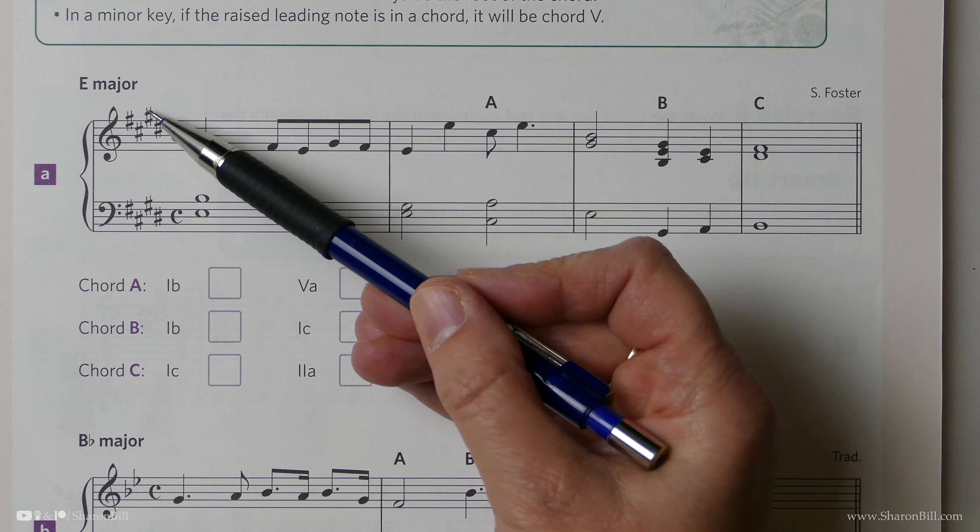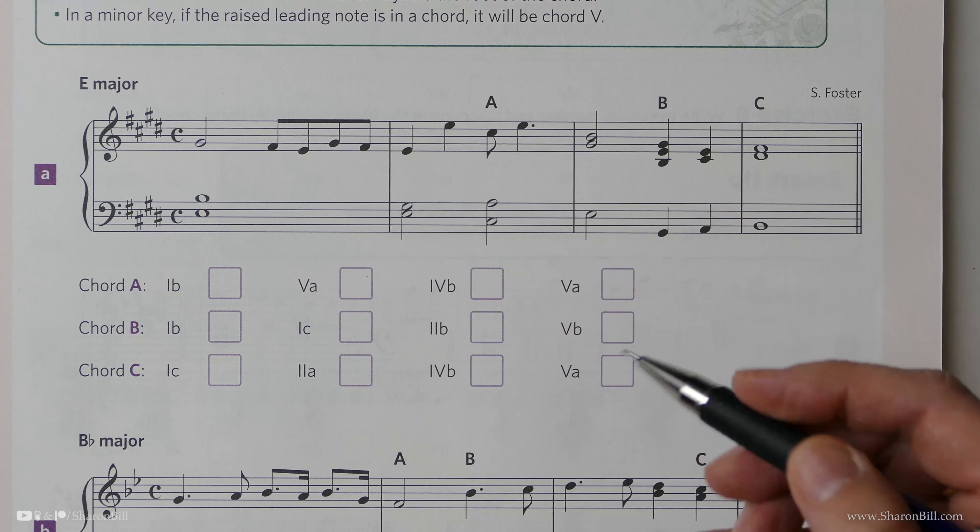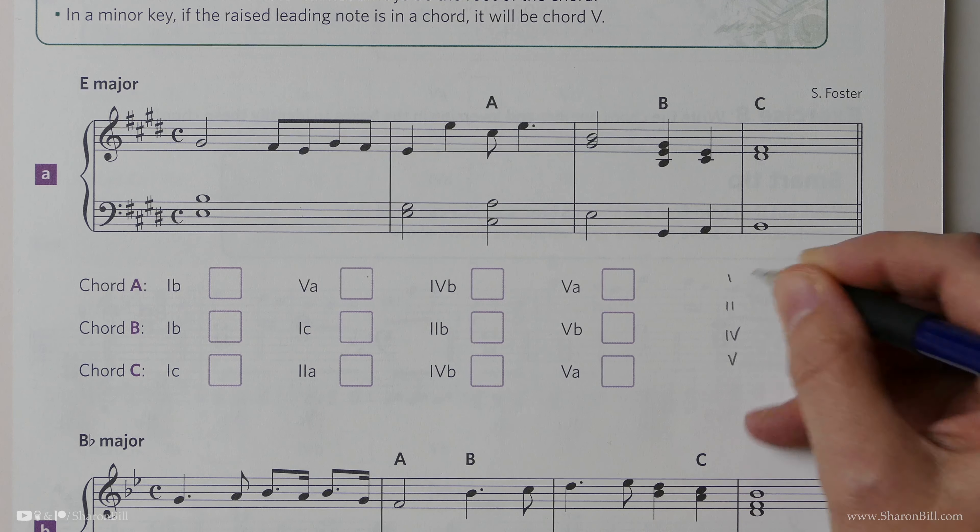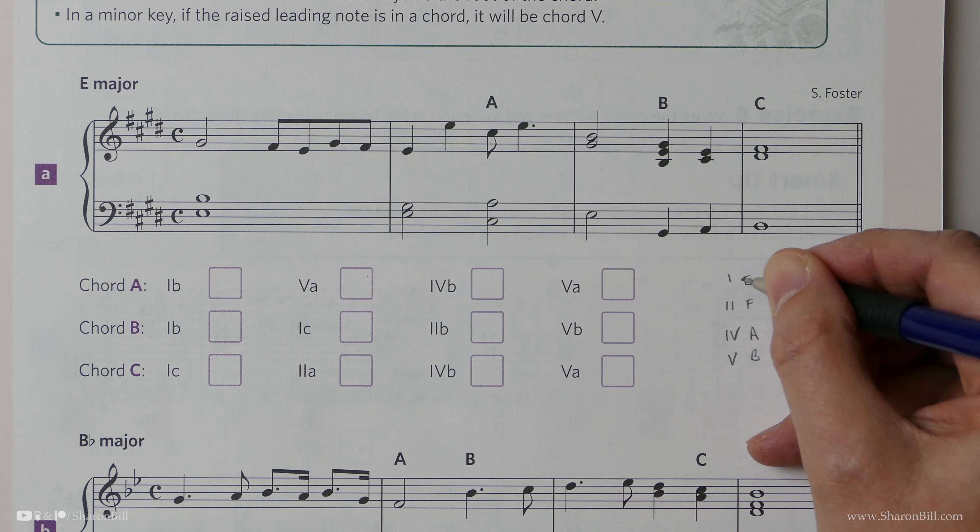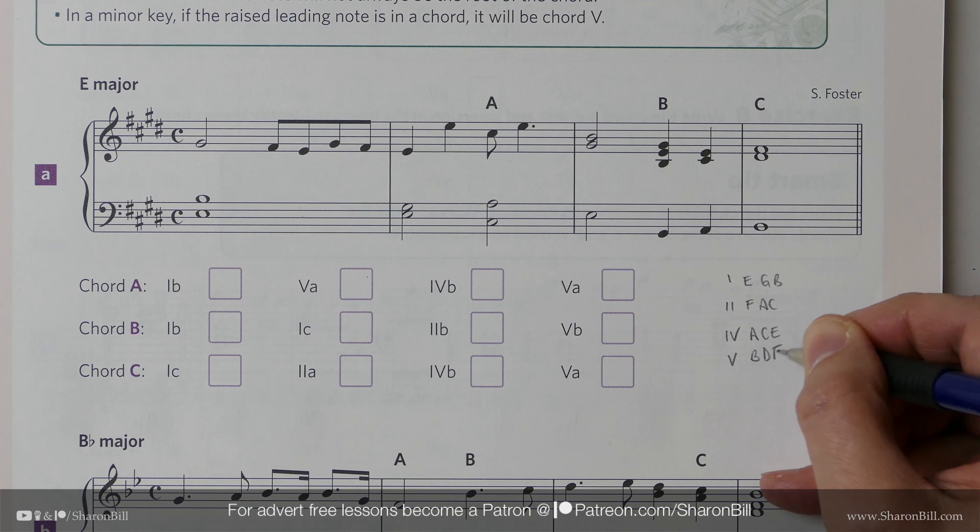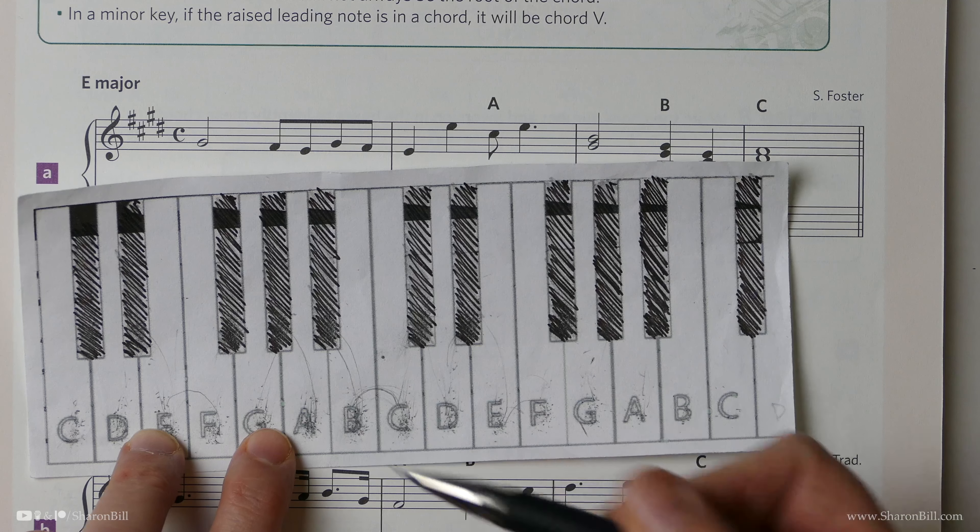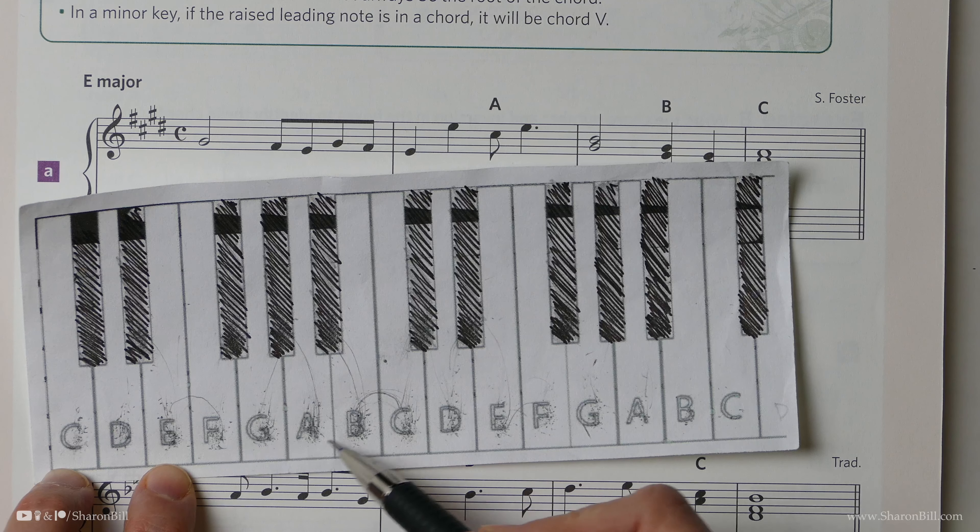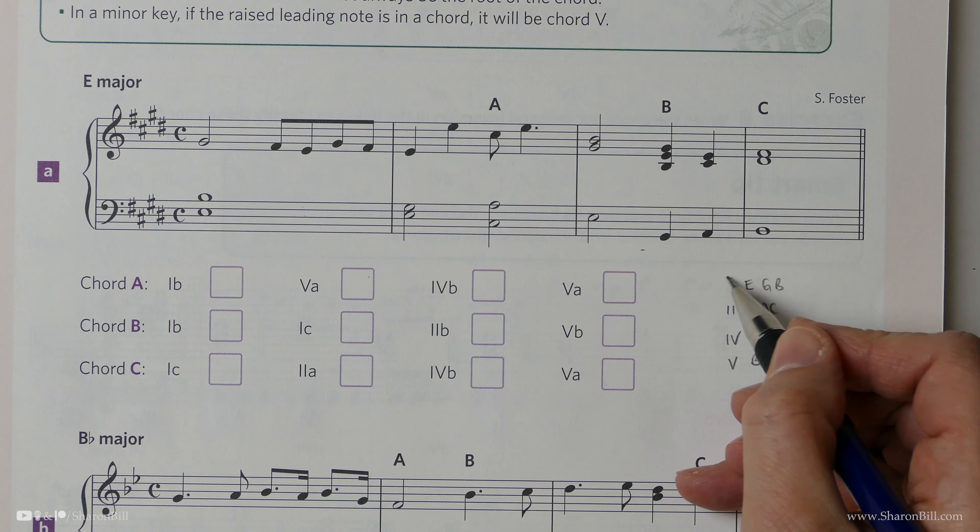We're in E major. We know that because we have a key signature of four sharps, and nothing else in the melody tells us that we're in a minor key. There's no accidentals to tell us otherwise, so we're looking for options between chords 1, 2, 4, and 5. The root note is E, and stepping up is F sharp. We miss G because we're not doing chord 3. Then we have A and B. Building our triads: E, G sharp, B - that's 1, 3, 5. F sharp, A, C sharp. A, C sharp, E. B, D sharp, F sharp. If you find that difficult, you can always just sketch out a piano keyboard and visualize it that way.